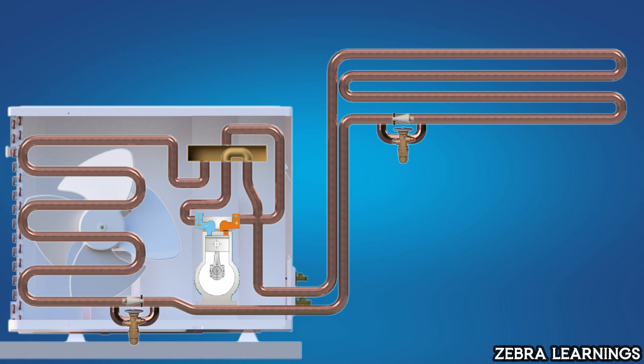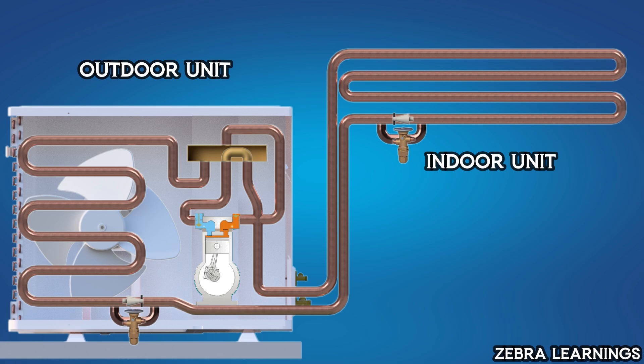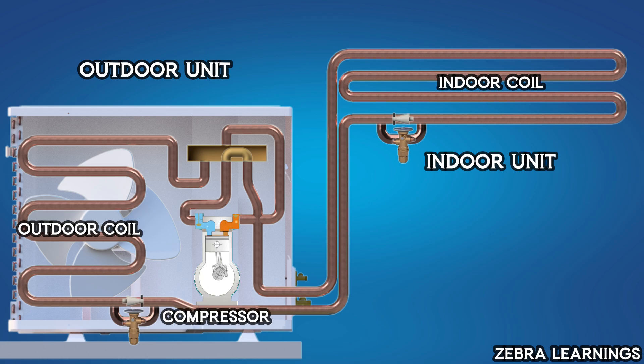As we mentioned earlier, a heat pump is essentially the same as the regular AC unit we use. It consists of an indoor unit which is inside the house and an outdoor unit which is outside the house. Inside these units, there are components like the indoor coil, outdoor coil, and compressor, which are things we are already familiar with.